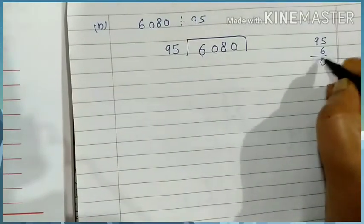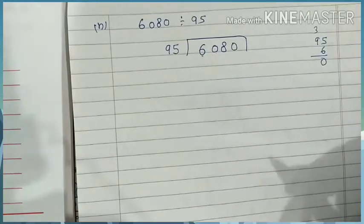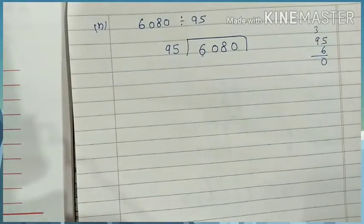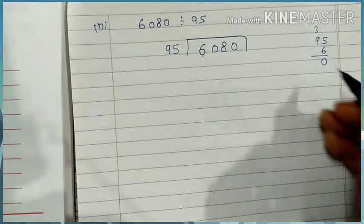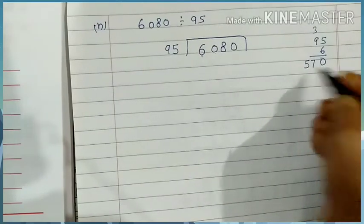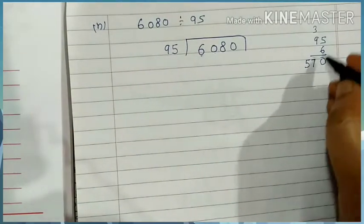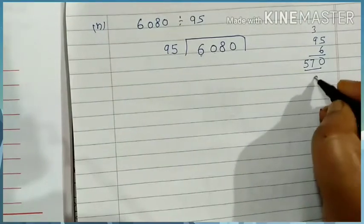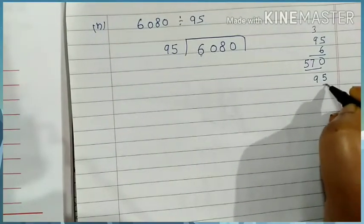We will take six fives are thirty, so three. Six nines are fifty four, fifty four, fifty five, fifty six, fifty seven. Now fifty nine, this is nine seventy, ninety five.